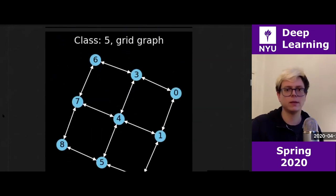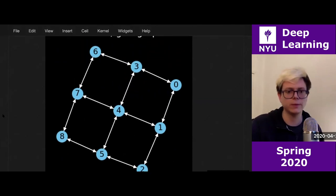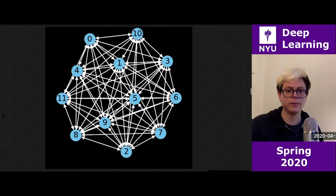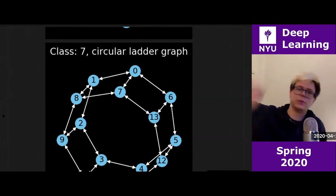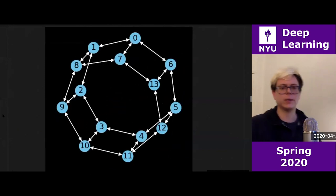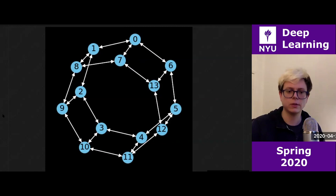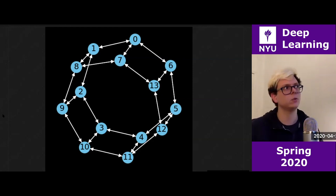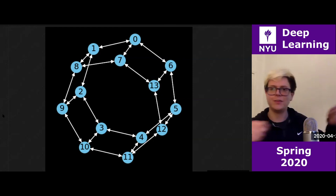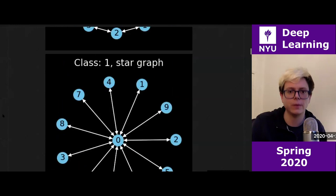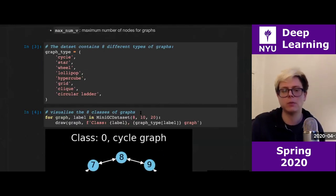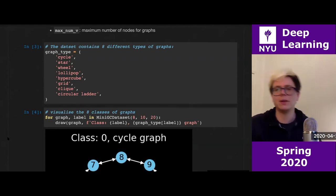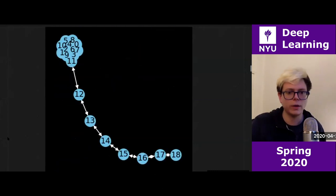Our task: given a graph structure, try to classify it as one type or another. Each graph is basically defined by its agency matrix. Given this agency matrix, we try to figure out which type of graph it is. The point is that this agency matrix is variable size — you can give a minimum and maximum number of nodes — so you can't do a straightforward fixed-size classification.